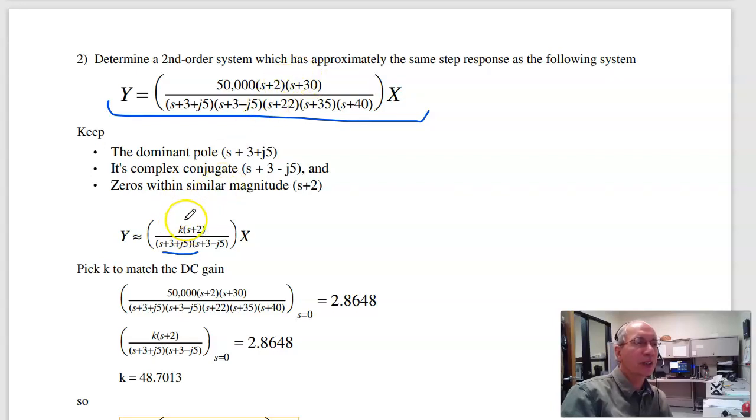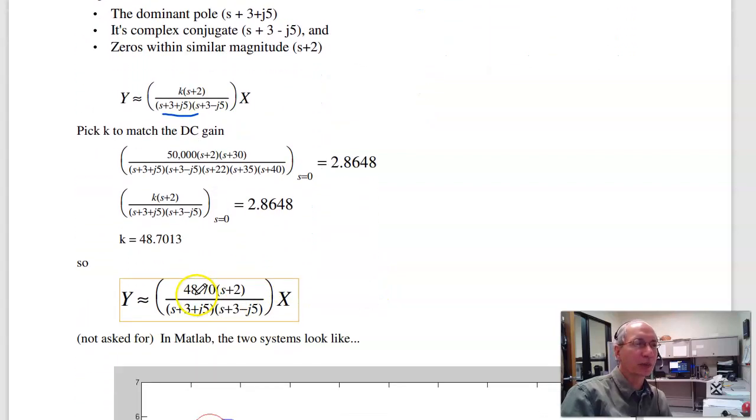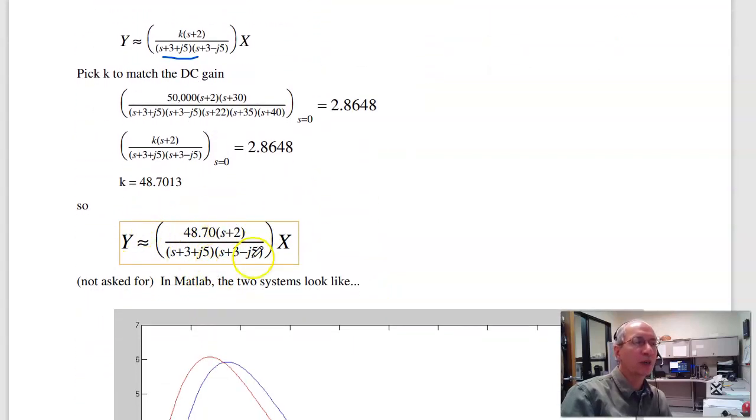Then add a fudge factor on top to match the DC gain. The fifth-order system has a DC gain of 2.86. Pick K to make the DC gain 2.86 as well. That gives you 48. So here's roughly the second-order approximation.